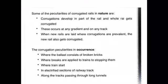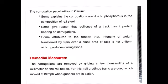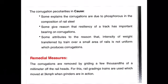There is no definite cause for why corrugations occur. Some explain that corrugations are due to phosphorus in the composition of the rail steel. Others give the reason that the resiliency of the track has an important bearing on the occurrence of corrugations. Some attribute it to the intensity of weight being transferred over a small area of rails non-uniformly. Each researcher explains the cause of corrugation differently.